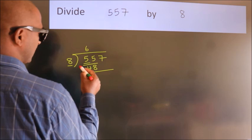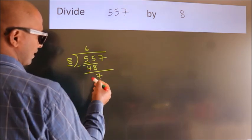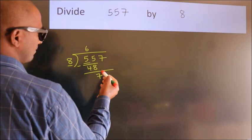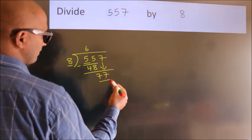Now we should subtract. We get 7. After this, bring down the beside number, so 7 down. So 77.